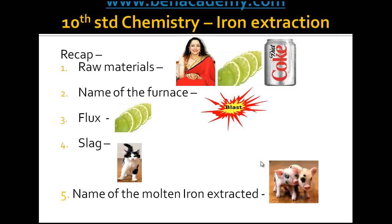Let us recap what we learned. The raw materials are hematite, limestone, and coke. The furnace is called the blast furnace. The role of limestone is to act as a flux. The impurity formed, called slag, is calcium silicate — remember the silly cat collecting it. The molten iron extracted is called pig iron — remember the pigs collecting it.